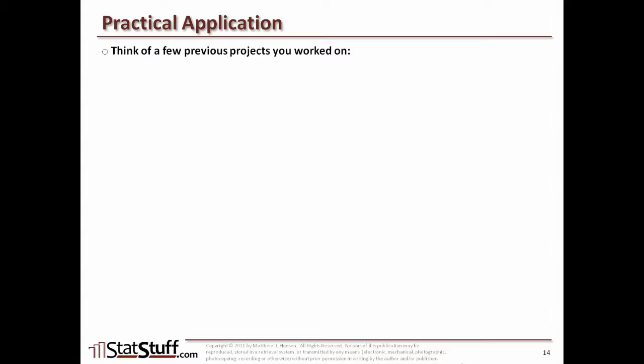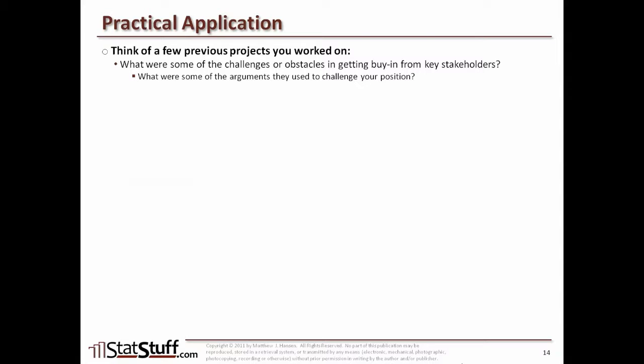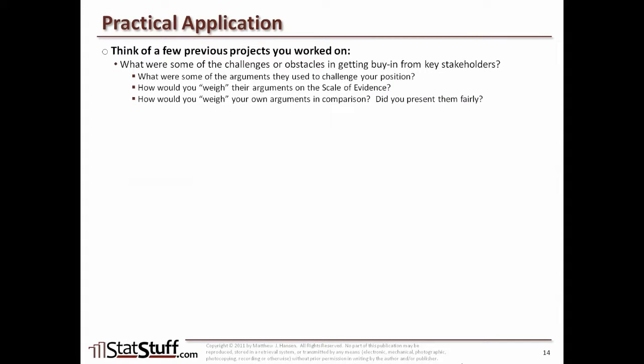Before we close this lesson, think of a few projects you've worked on and ask yourself: What were some challenges or obstacles in getting buy-in from key stakeholders? What arguments did they use to challenge your position? How would you weigh their arguments on the scale from ignorance to truth — styrofoam to gold? How would you weigh your own arguments in comparison, and did you present them fairly? How could their arguments have been peacefully challenged to persuade them to change? Check out StatStuff.com for more resources. I'm Matt Hanson — thanks for watching.